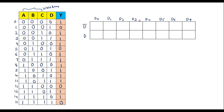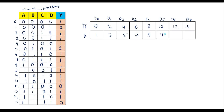Now we can observe that for even-numbered cells 0, 2, 4, 6, 8, 10, 12, 14, the value of D is 0. So we consider those cell numbers for the D̄ row. For odd-numbered cells 1, 3, 5, 7, 9, 11, 13, 15, the value of D is 1, so that row indicates D. The columns span 0 through 15, organized across D̄ and D rows.